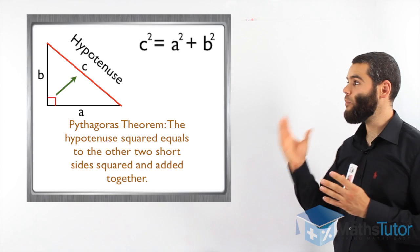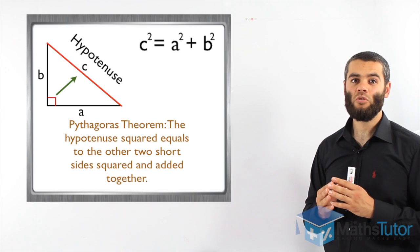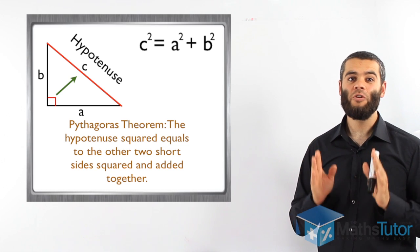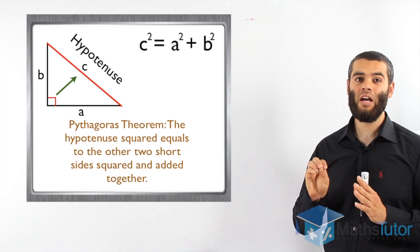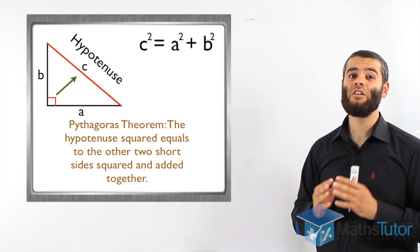He found out that the hypotenuse squared will always equal to the other two short sides squared and added together. This will only work in right-angled triangles. So this is a special relationship that only applies to right-angled triangles. So how can we actually use this in maths?